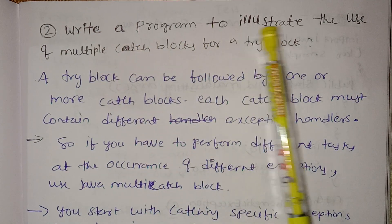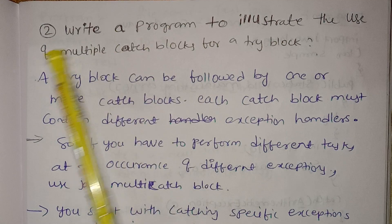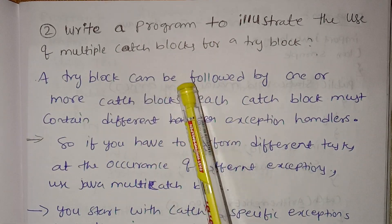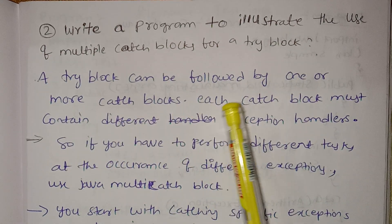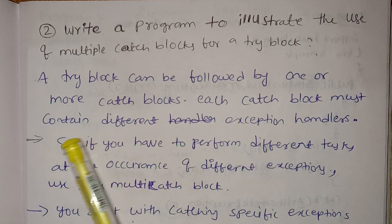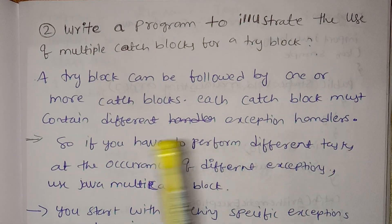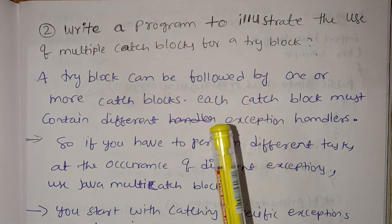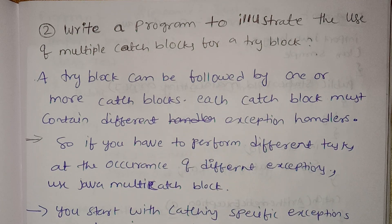Write a program to illustrate the use of multiple catch blocks for a try block. A try block can be followed by one or more catch blocks. Each catch block must contain different exception handlers. In the try block there can be multiple exceptions, and in the catch block there are also multiple exceptions — different exceptions.